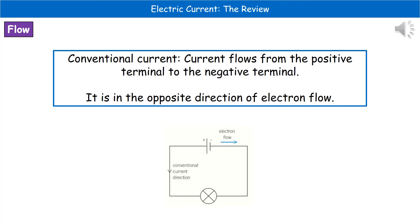If we have a look at the circuit diagram at the bottom of the screen, what we can see is we've got two different things labeled on. You've got the electron flow, which goes from the negative terminal of our battery round to the positive, and then we've got the conventional current direction, which goes from the positive to the negative.